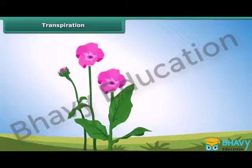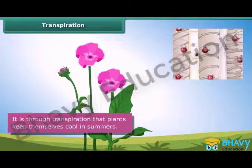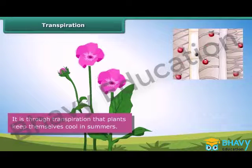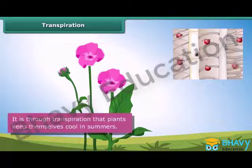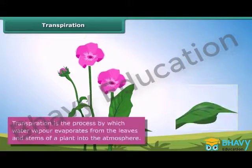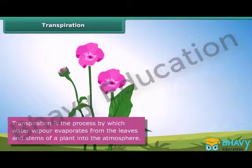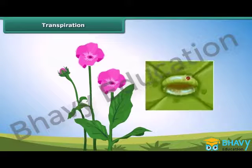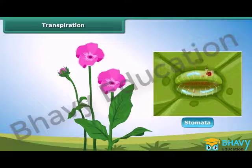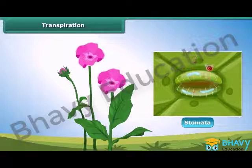An important function of the leaf is to keep the plant cool in summers. This is accomplished through transpiration. Transpiration is the process by which water vapor evaporates from the leaves and stems of a plant into the atmosphere. Small pores called stomata on the underside of the leaves facilitate transpiration.